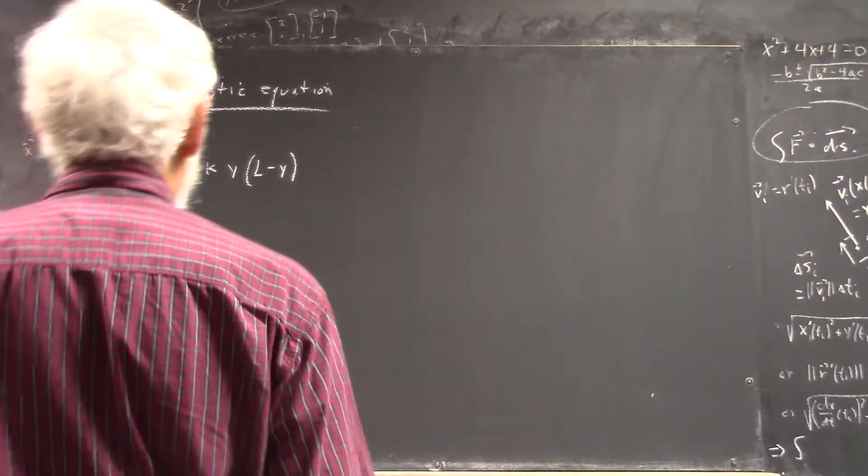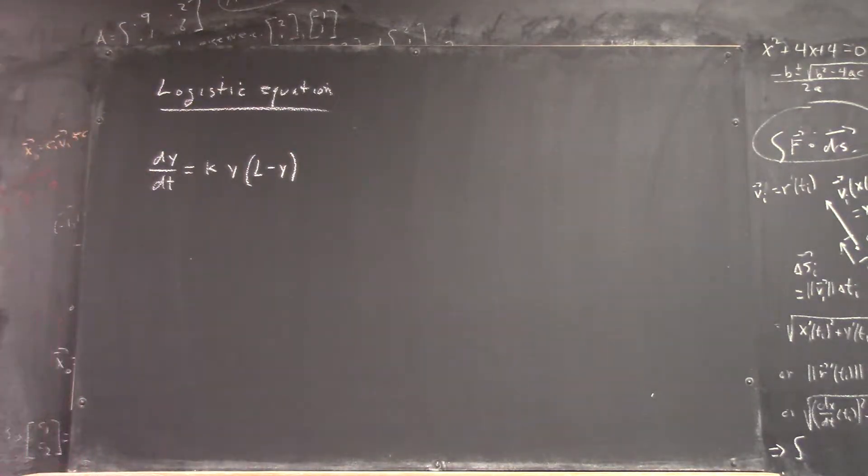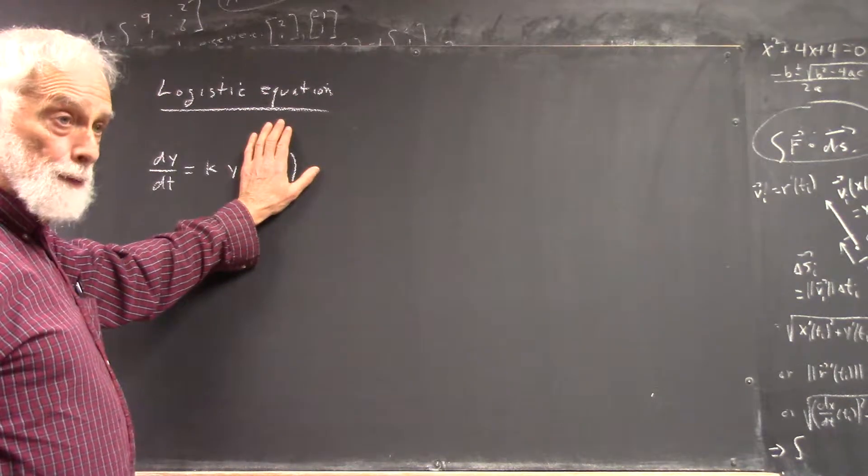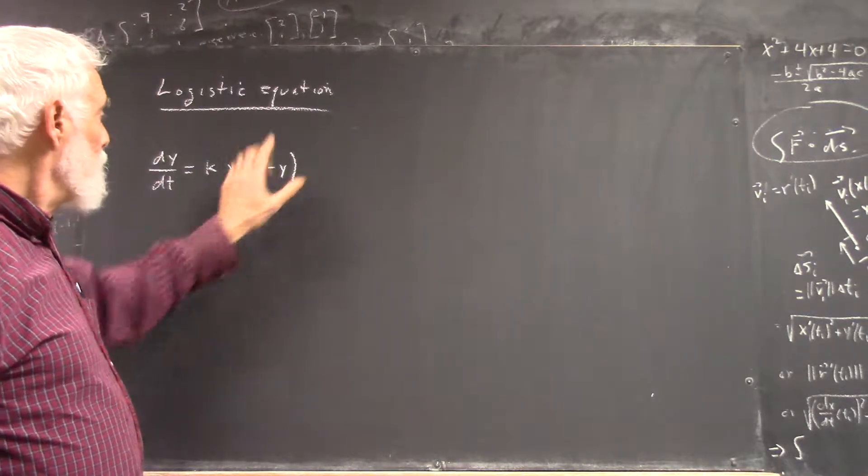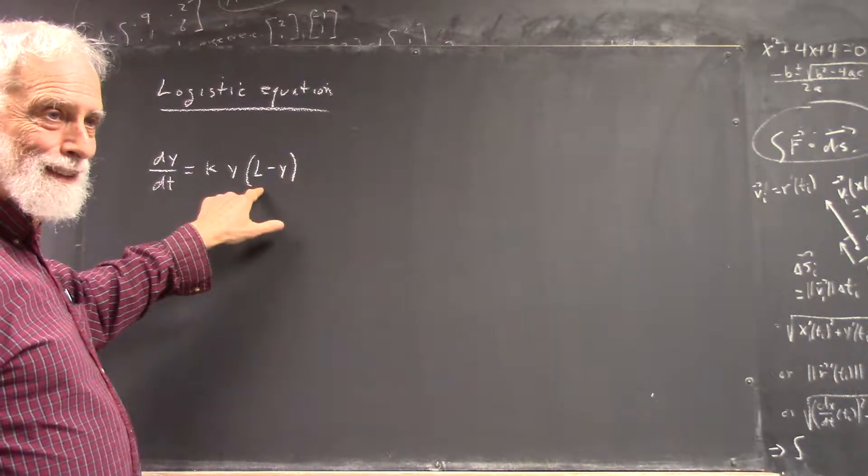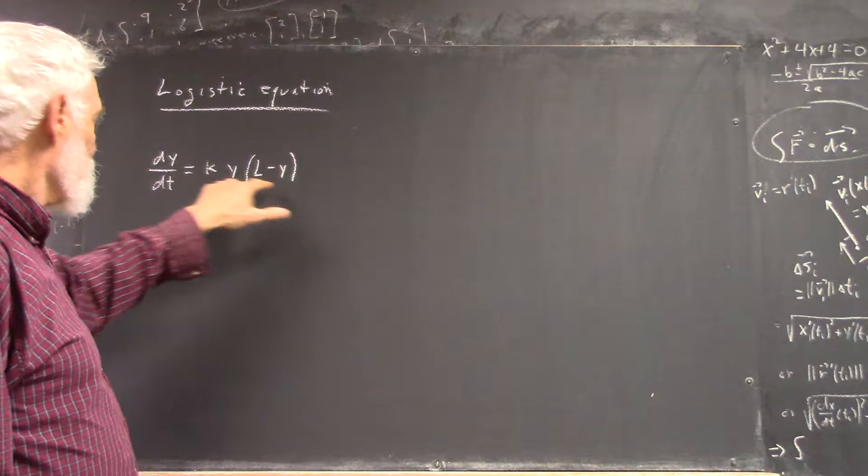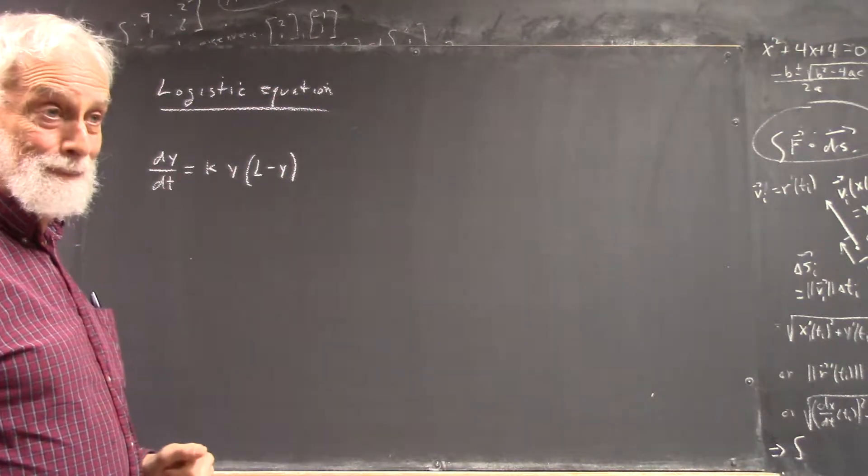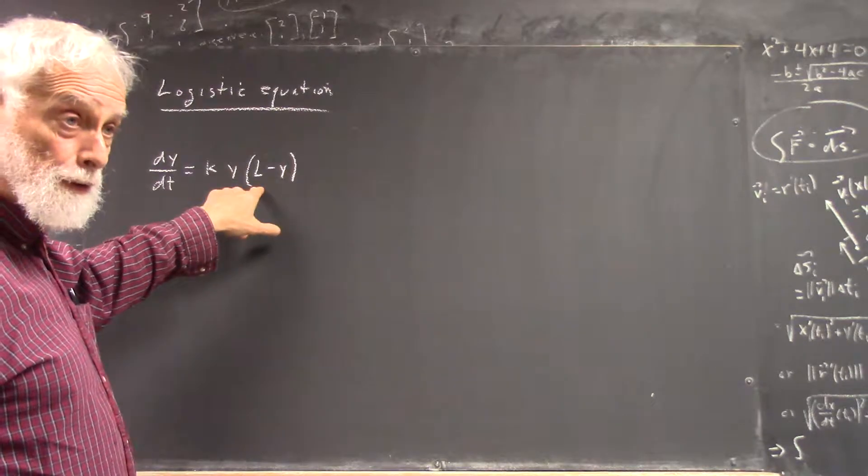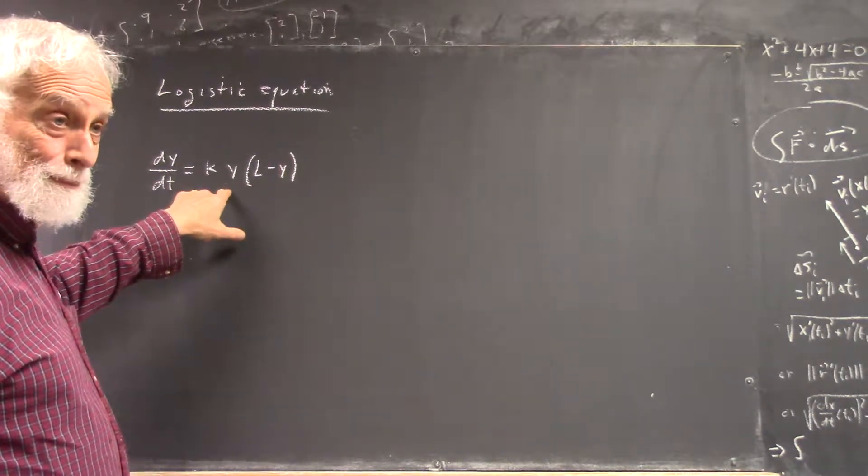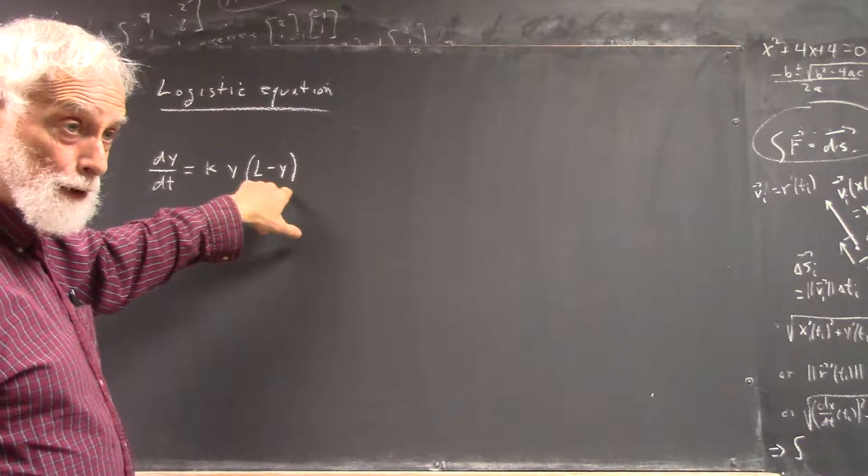Okay, we've got the logistic equation. And what this is, is just exponential growth. But if y gets too close to L, the growth rate decreases. Things change more and more slowly as y gets close to L, and this term takes over from this one, because this approaches zero.